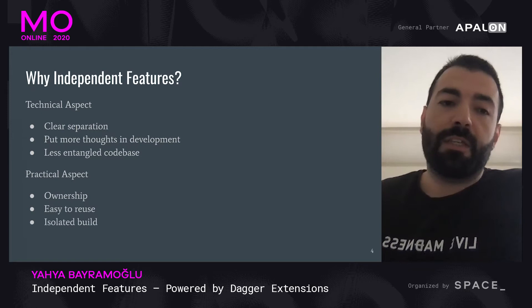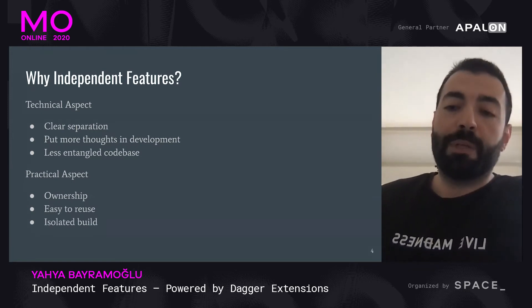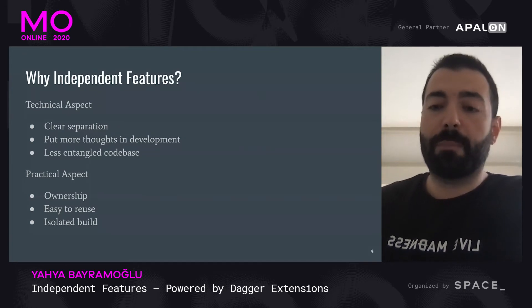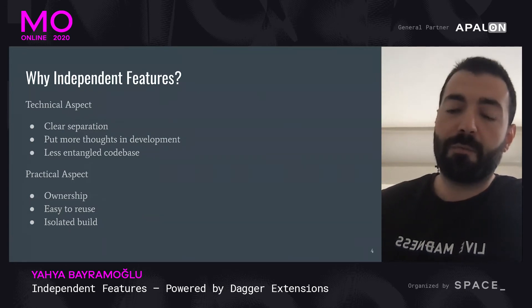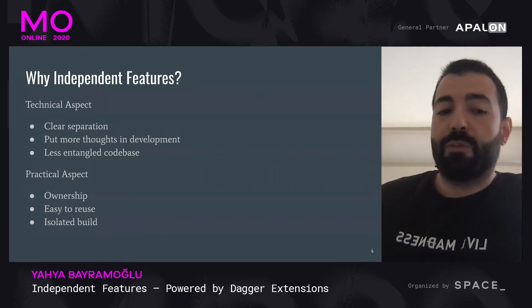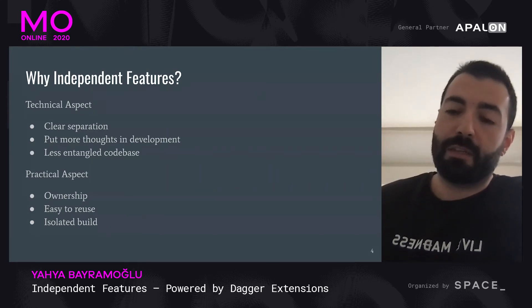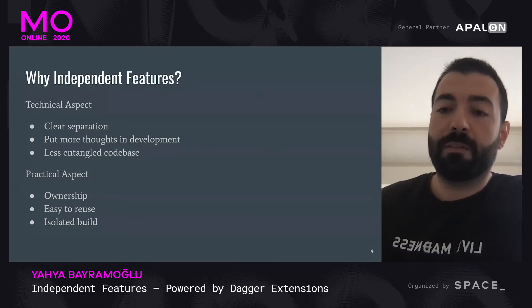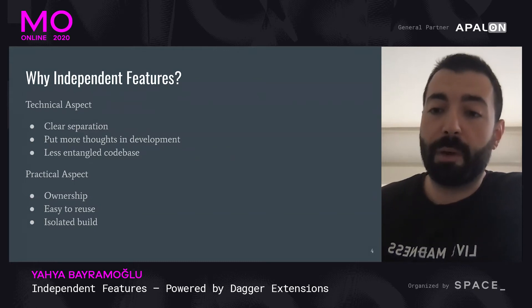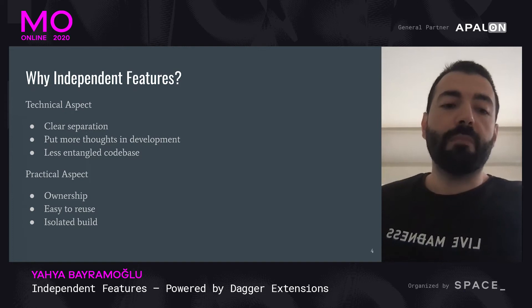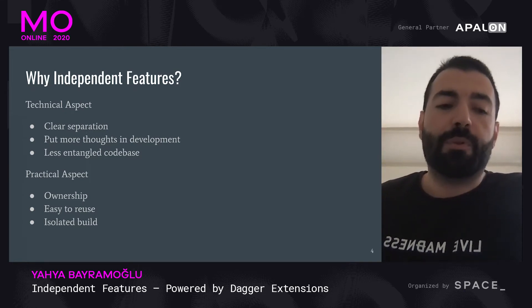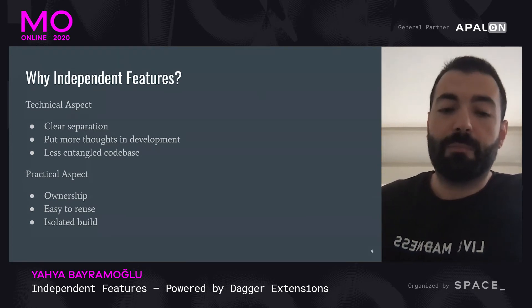It can also provide you an isolated build. If you are working in a big project, you don't want to build the entire application all the time while doing day-to-day work. What you can do is build a shell application and then enable your own feature while developing, so that you can keep developing without waiting for the other features to be compiled as well. This is very useful especially if you're working in a big project and don't want to wait for the build time.